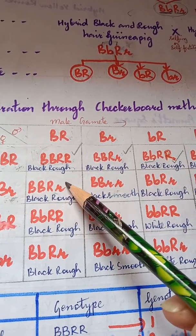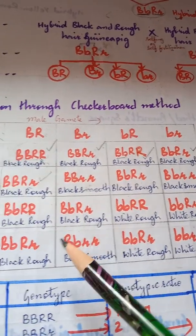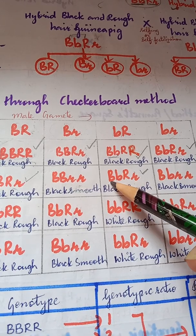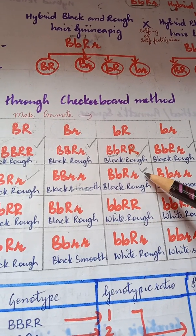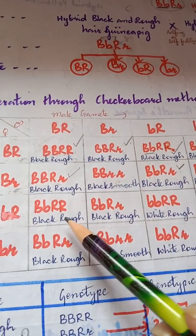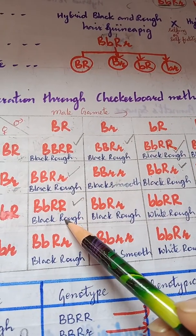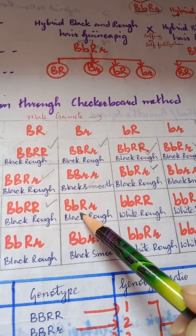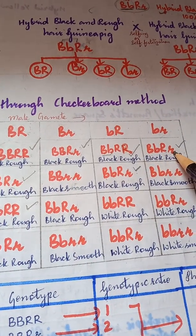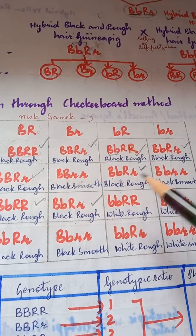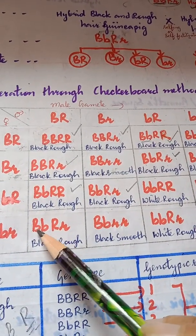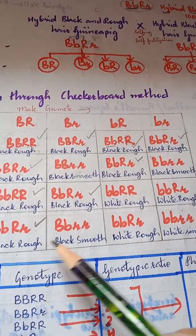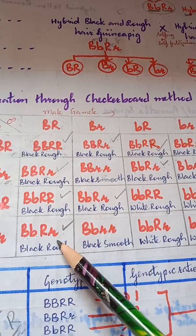Among the 9 black rough guinea pigs, the genotypes are: capital B capital B capital R capital R — only 1; capital B capital B capital R small r — 2; capital B small b capital R capital R — 2; capital B small b capital R small r — 4. Although all are black rough, their genotypes are different from each other.